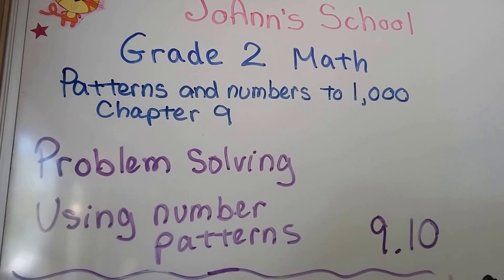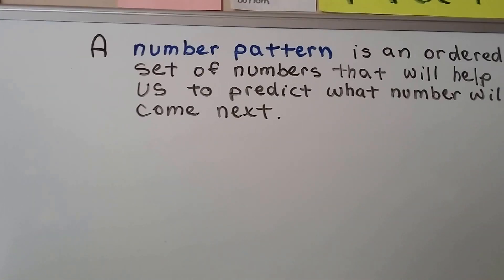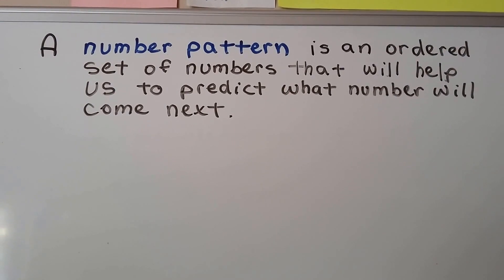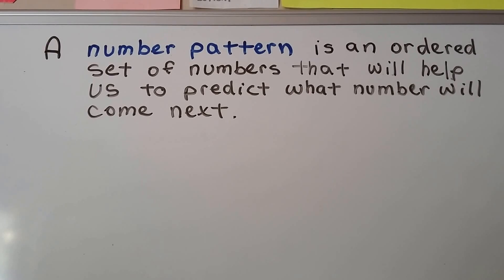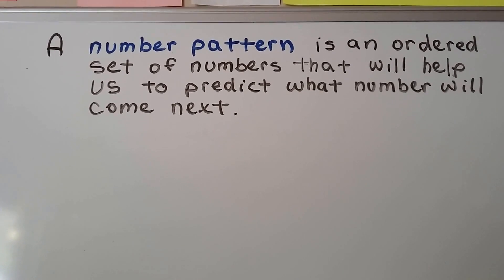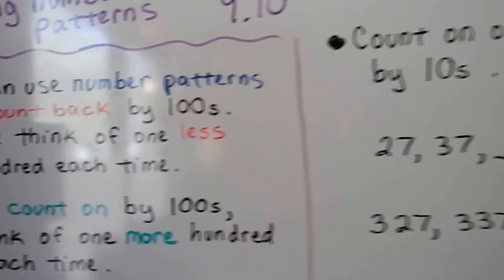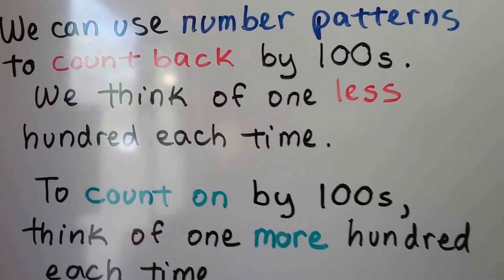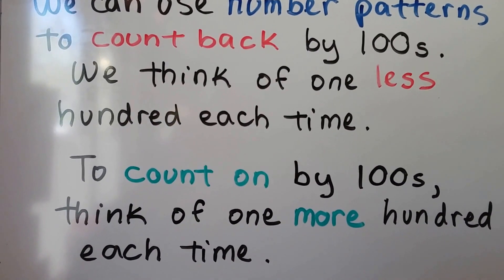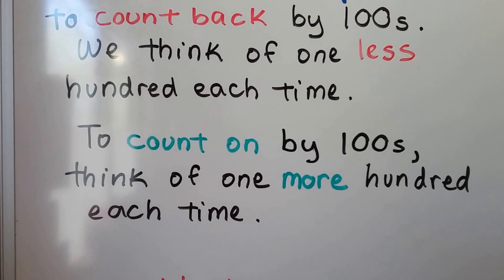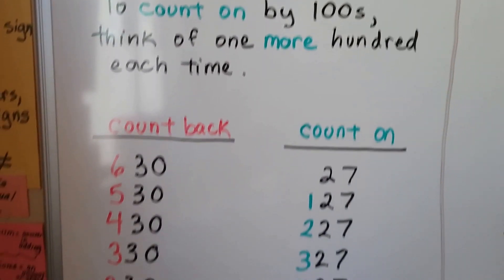Problem solving using number patterns, lesson 9.10. A number pattern is an ordered set of numbers that will help us predict what number will come next. We can look at the pattern that the numbers are making to help us figure out what comes next or what's missing. We can use number patterns to count back by 100s, thinking of one less hundred each time, or count on by 100s, thinking of one more hundred each time.